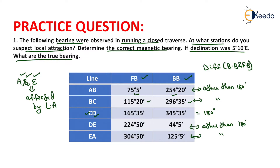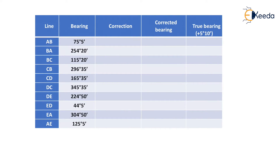In an open traverse, we cannot determine this directly just by observing the backbearing and forebearing differences. Now for finding the correct magnetic bearing, we make a table with columns: line, bearing, correction, corrected bearing, and true bearing. We write all the readings as forebearing, backbearing, forebearing, backbearing, and so on.